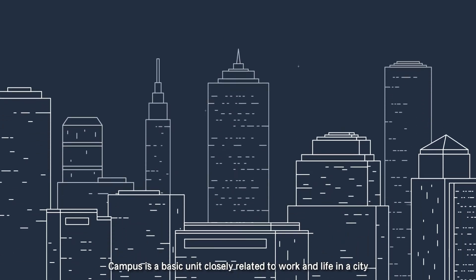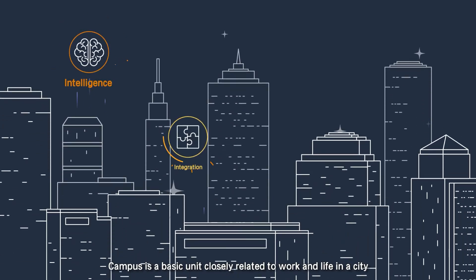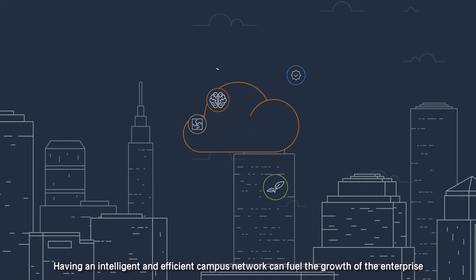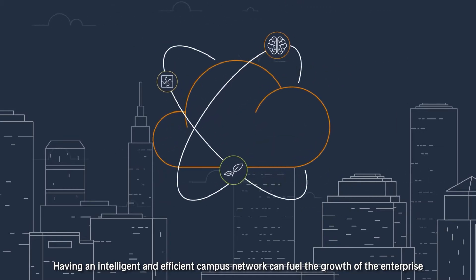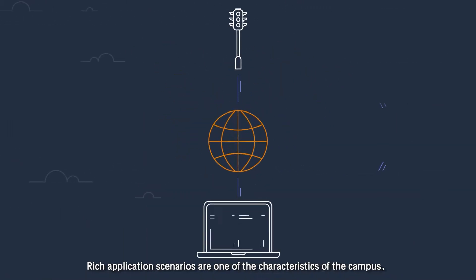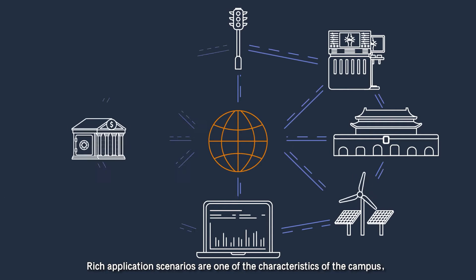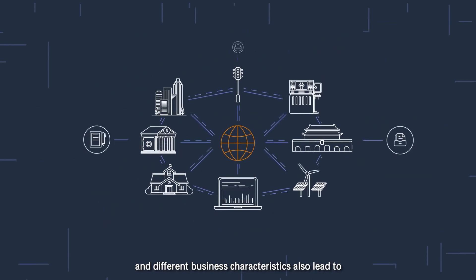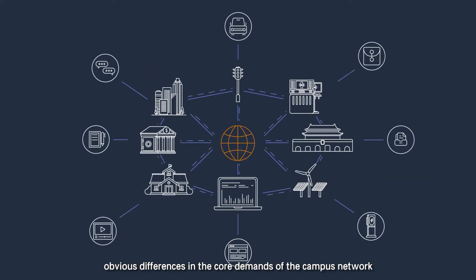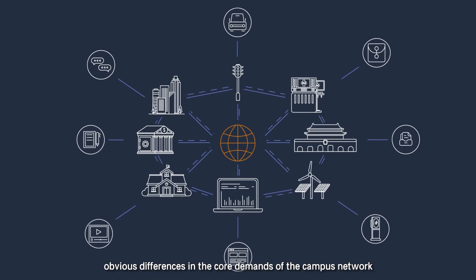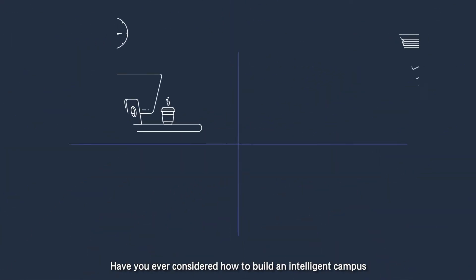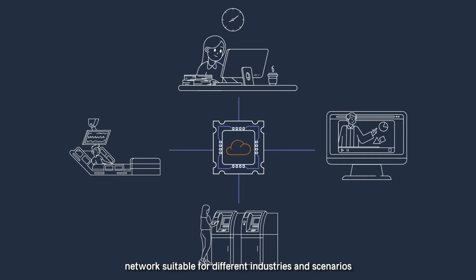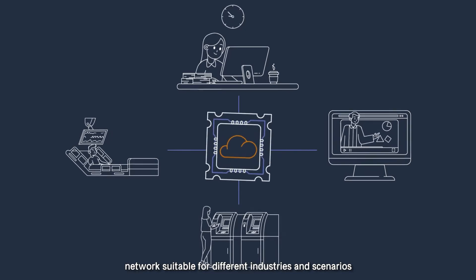Campus is a basic unit closely related to work and life in a city. Having an intelligent and efficient campus network can fuel the growth of the enterprise. Rich application scenarios are one of the characteristics of the campus, and different business characteristics also lead to obvious differences in the core demands of the campus network. Have you ever considered how to build an intelligent campus network suitable for different industries and scenarios?